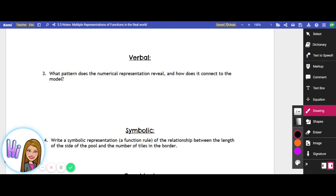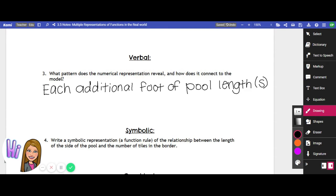It would add how many tiles to the border, or like the number of tiles is equal to what? So as we add each additional foot of pool length, and we'll call that letter S, it's going to add each time how many tiles to the border?